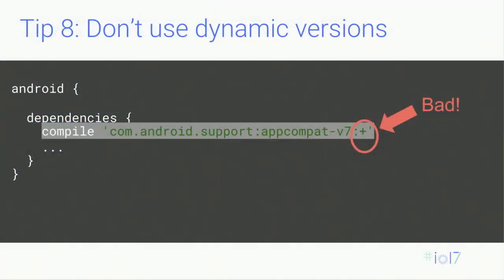Tip eight is that you should not use dynamic versions. Gradle provides a convenient way to request the latest version of a library using the plus symbol, but this is bad for a couple of reasons. From a performance perspective, it makes Gradle check for new versions every 24 hours, increasing dependency resolution time. Even if you accept that hit, it makes your build non-deterministic — a build today versus two weeks from now might build completely different things because libraries have changed underneath you. Please avoid doing this.